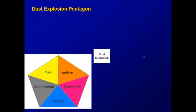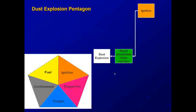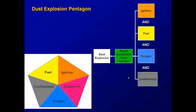In cause mapping form, our effect is a dust explosion. In order for it to occur, we need — as with any explosion — a rapid uninhibited chain reaction. In this case, that's caused by heat or an ignition source, fuel, oxygen, and confinement. Dispersion is also required when we are looking at dust explosions.